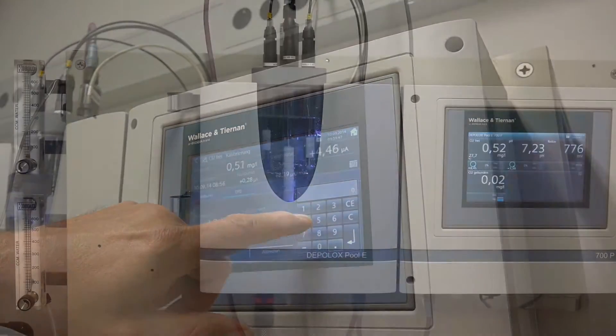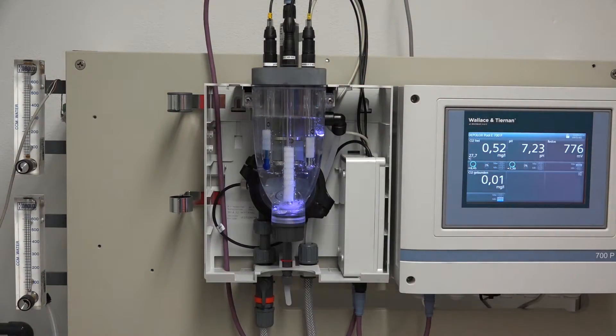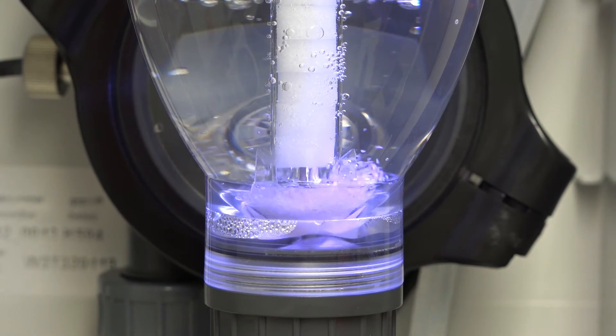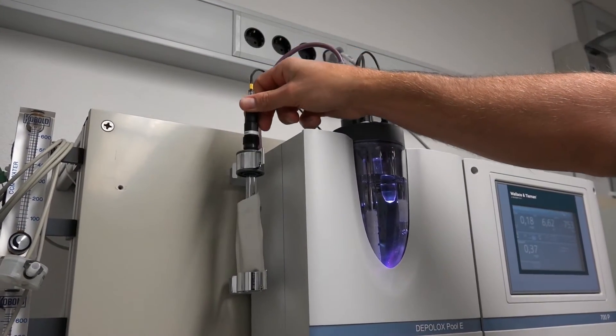What is already perfect does not need to be improved. Consequently, the tried and tested measurement setup for free chlorine, pH values and redox voltage is also used in the new device. Other parameters such as the combined chlorine content are also possible.